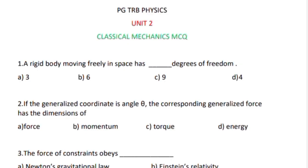Welcome to BG education, PG-TRB Physics, Unit 2 Classical Mechanics, MCQ. A rigid body moving freely in space has dash degrees of freedom. The answer is 6 degrees of freedom.